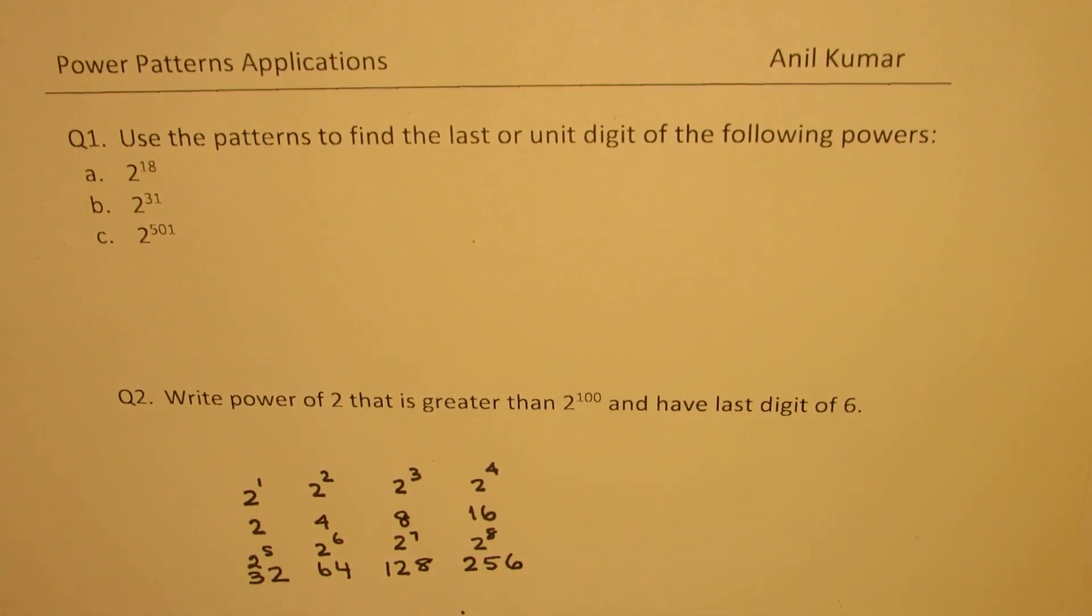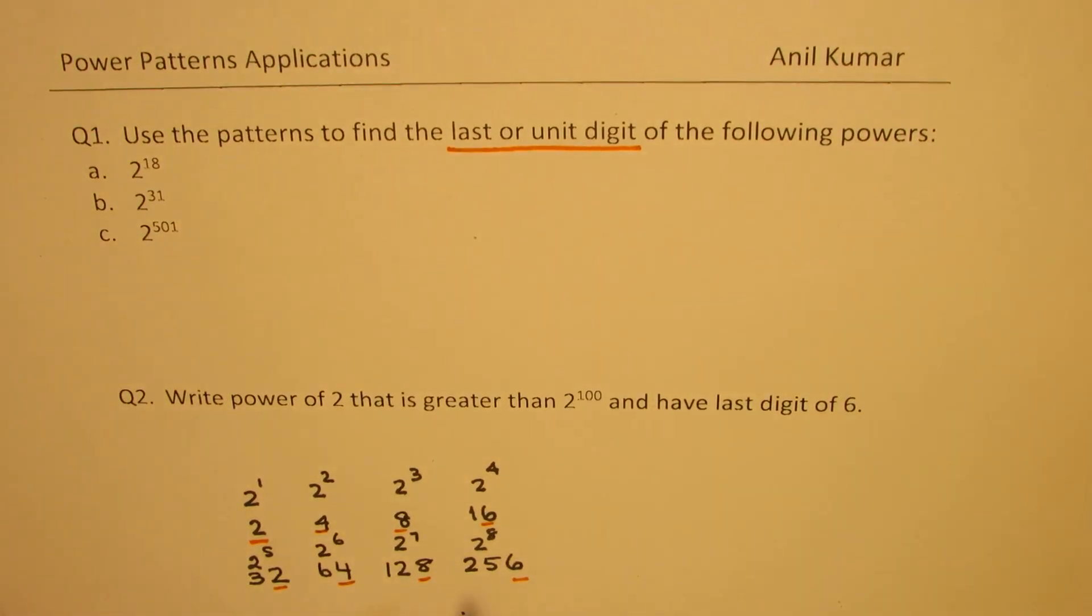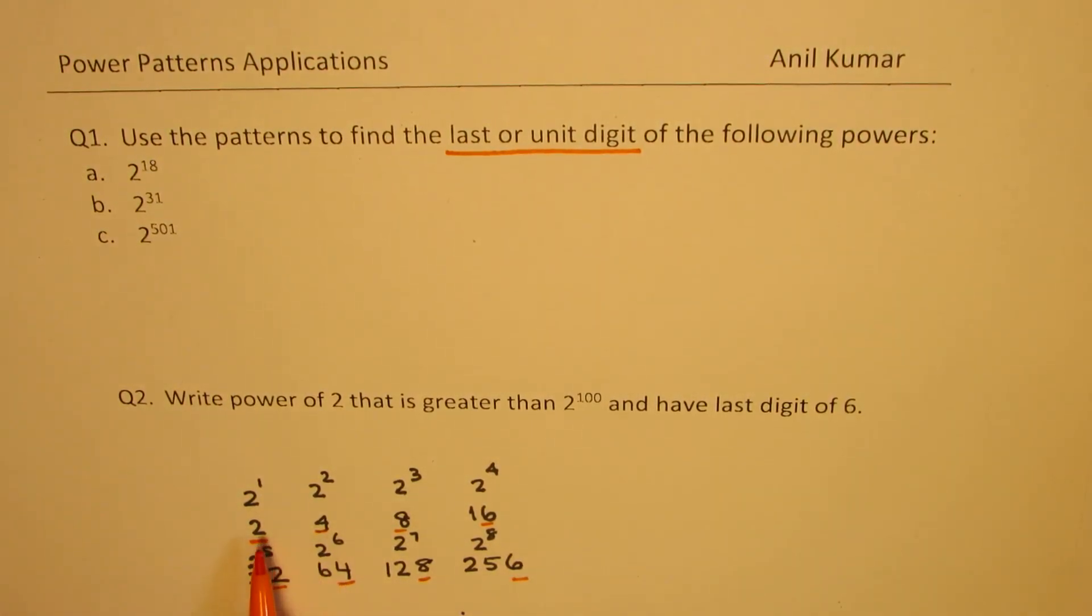So, if you look into the last digit, it is the last digit 2 and 2 matches. Then we have 4 and 4, 8 and 8, 6 and 6. Now, this is what we call as the last or the unit digit. So, in any power of 2, we find a pattern. This number 2, 4, 8, 6 repeats.